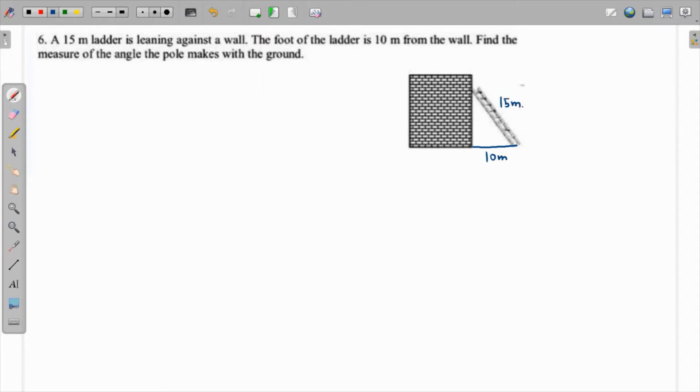So what is the measure of the angle the pole makes with the ground? We have to find this particular angle, called theta. We see there's a triangle which is being formed like this.